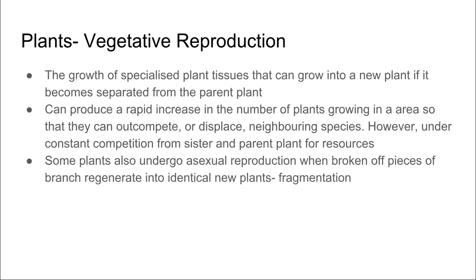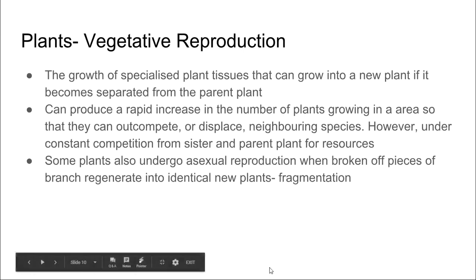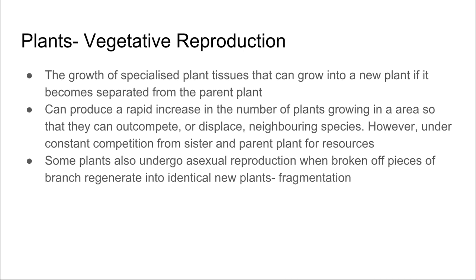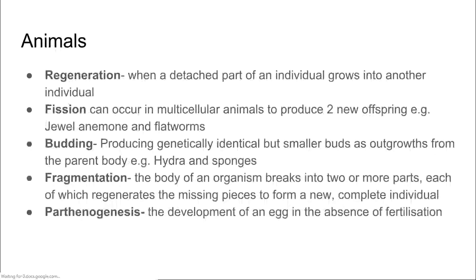Plants undergo vegetative reproduction, which is the growth of specialised plant tissues that grow into a new plant if they become separated from the parent. This allows plants to rapidly increase in number in an area and out-compete or displace neighbouring species, which is also a form of survival for that species. Some plants can undergo asexual reproduction when broken off, and this is called fragmentation.